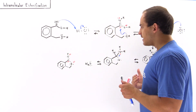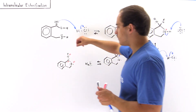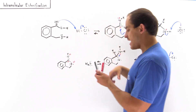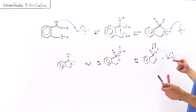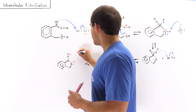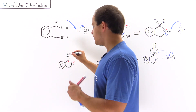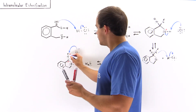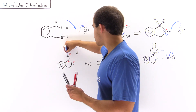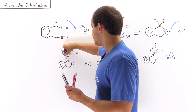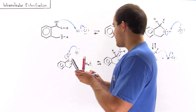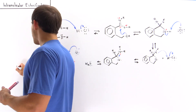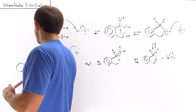Finally, in the last step, we have deprotonation of this oxygen. Either the water molecule deprotonates this H, or the chloride ion produced earlier approaches and deprotonates this oxygen. The negative charge removes the H, the two electrons form our double bond, and the final product formed is our ester.